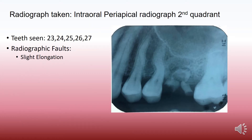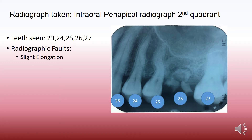The radiograph taken and the one which we are discussing today is an intra-oral periapical radiograph of the second quadrant. The teeth seen are 2-3, 2-4, 2-5, 2-6, and 2-7.